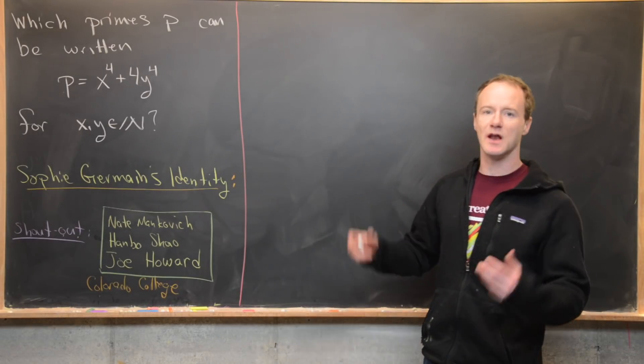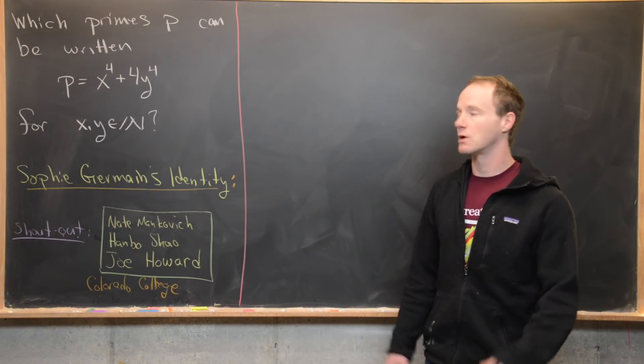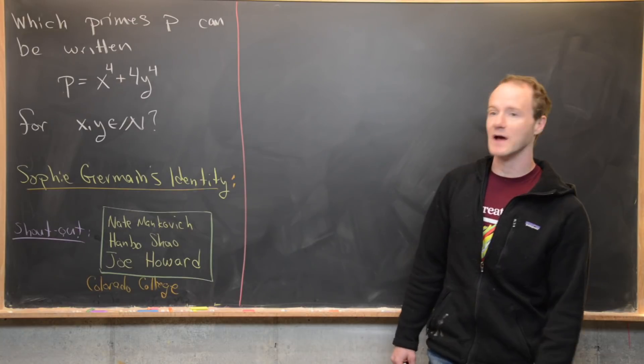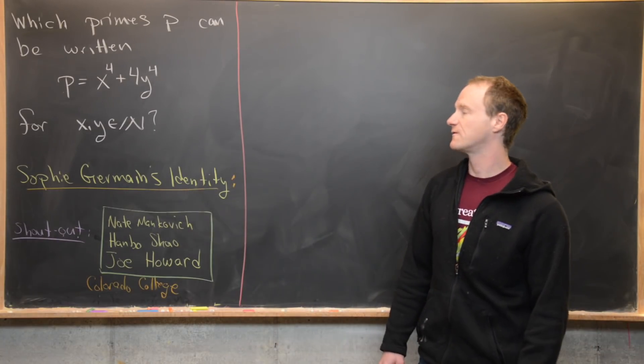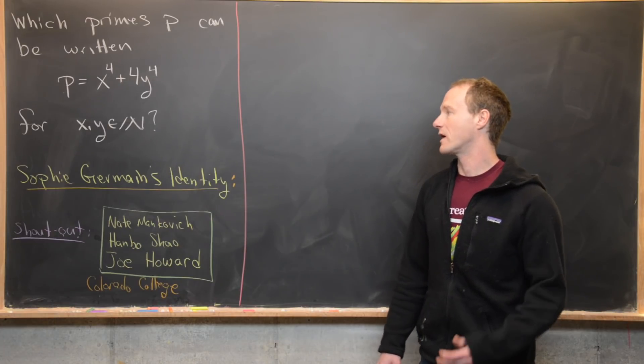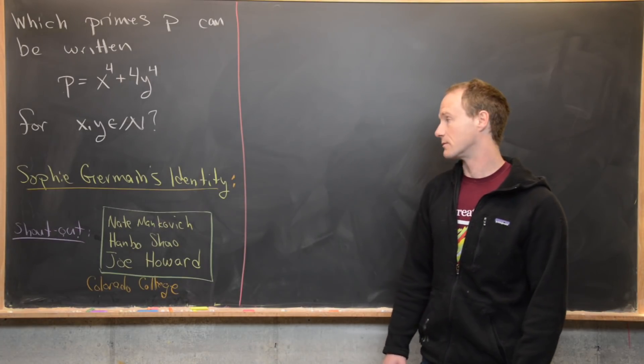Here we want to look at a quick algebra number theory type problem. Our goal is to find all primes p that can be written in the form x to the fourth plus 4y to the fourth, where x and y are natural numbers.